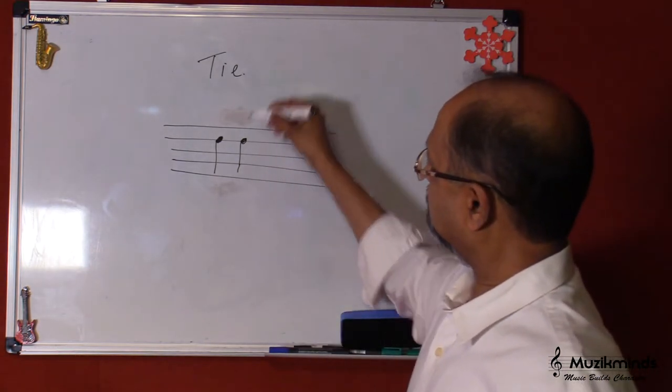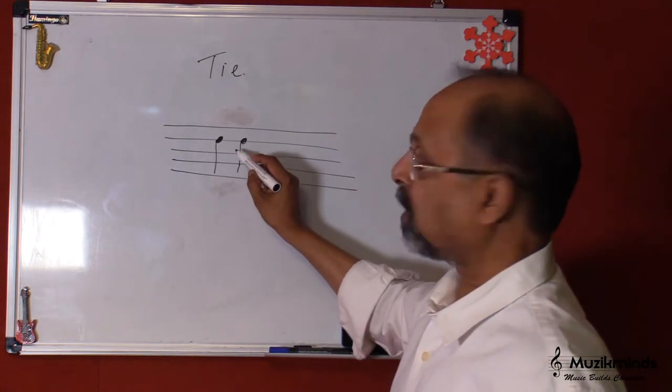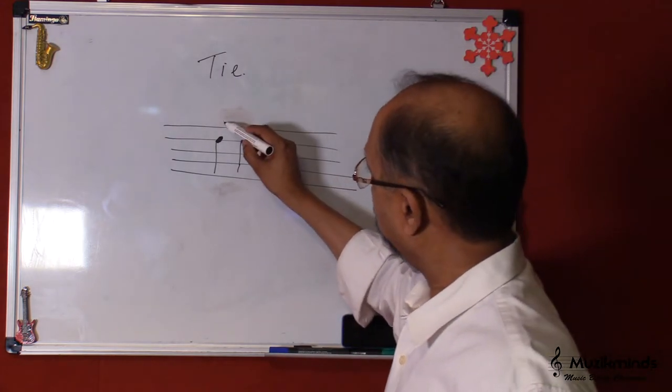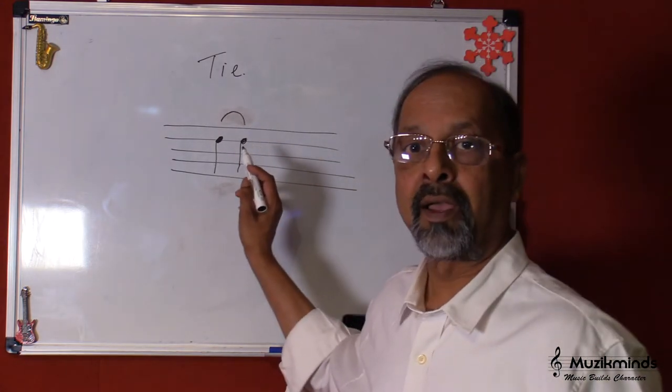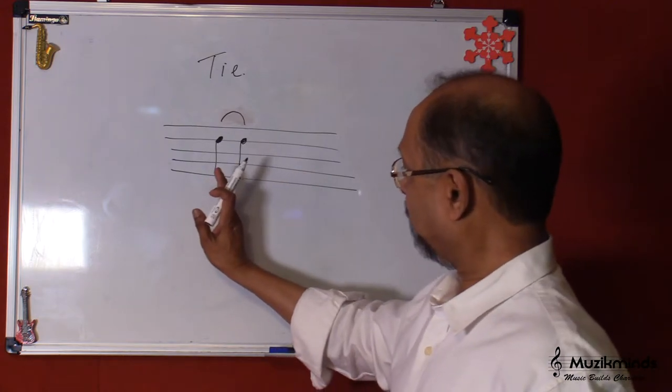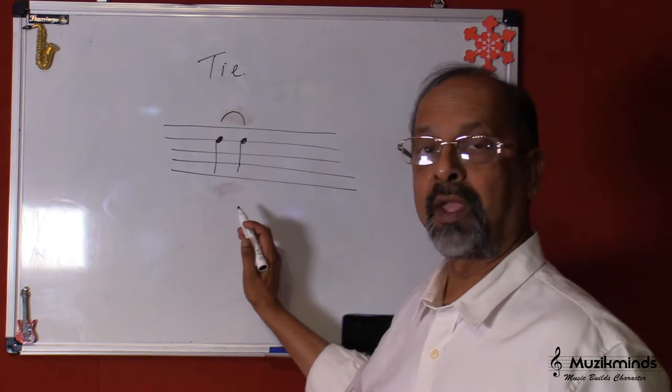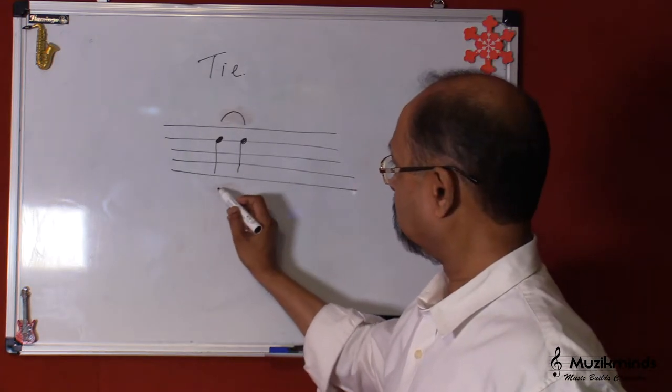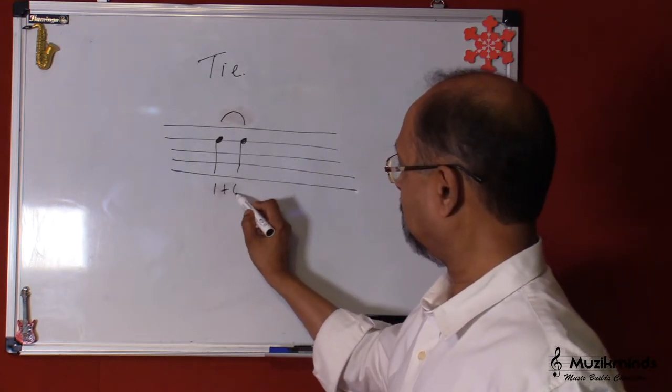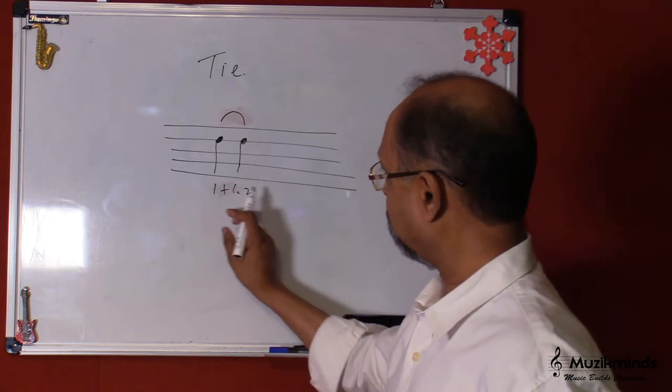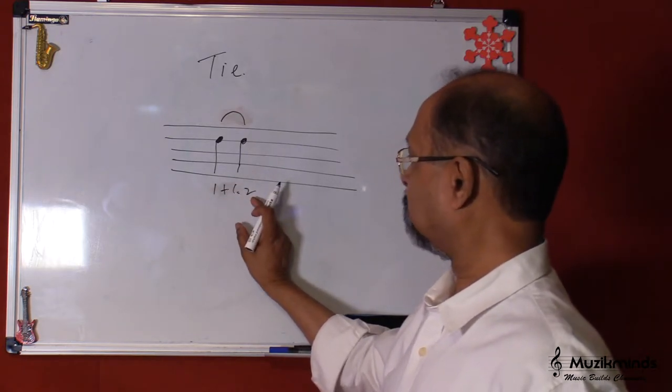Now this, when there are two notes of the same pitch joined together by a curve here, this is called a tie. The value, the length of this is the sum of both these notes together. So there are two crotchets here, so it's one plus one beat. So the length of this is two beats.